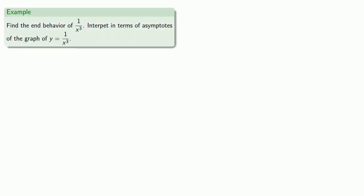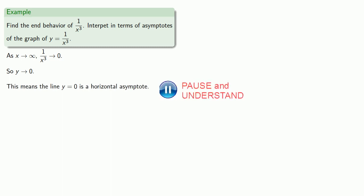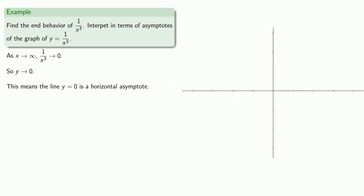So, for example, find the end behavior of 1 over x cubed and interpret in terms of asymptotes of the graph of y equals 1 over x cubed. As x goes to infinity, 1 over x cubed goes to 0. And "equals" means replaceable, so if y equals 1 over x cubed, y also goes to 0. And that means the line y equals 0 is a horizontal asymptote. So if we follow our graph of y equals 1 over x cubed to the far right, our points will approach y equals 0.